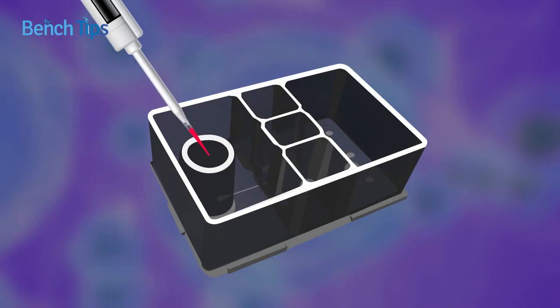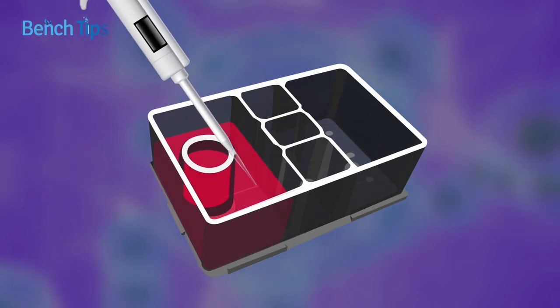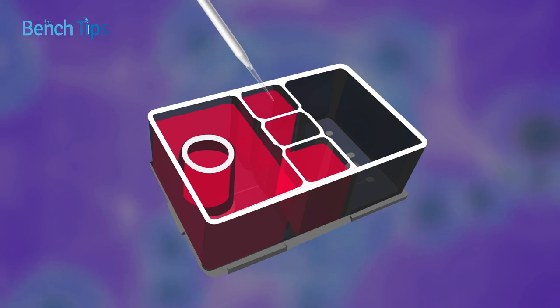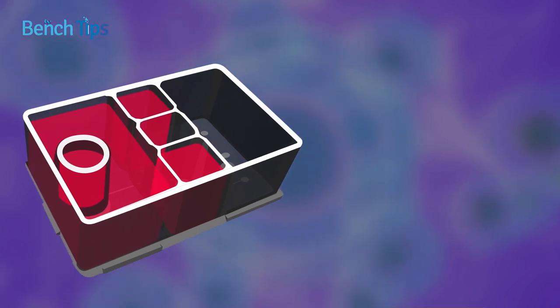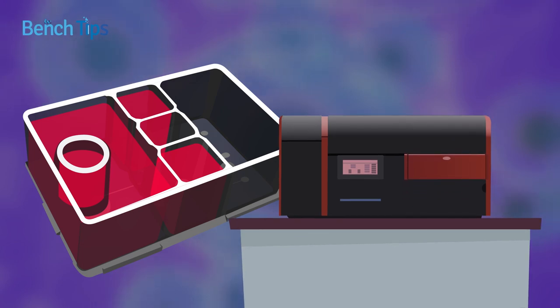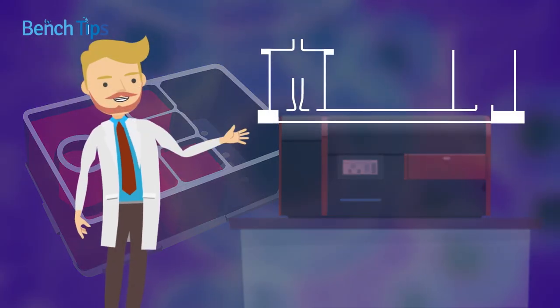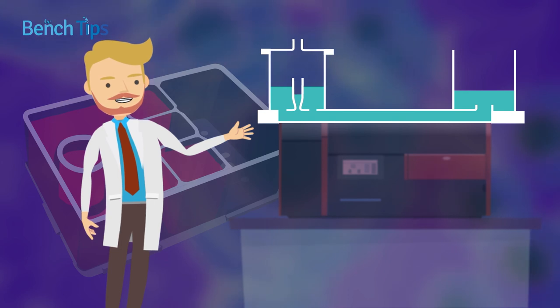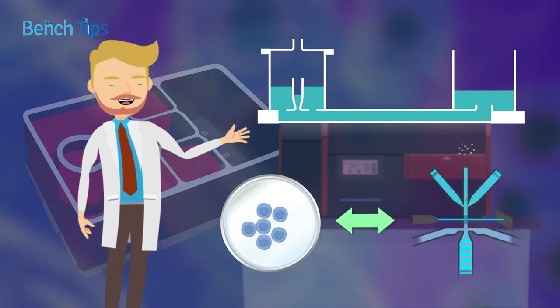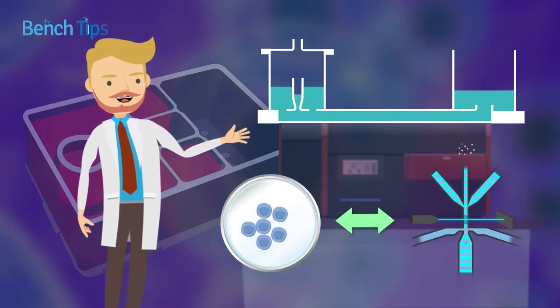Second, since the sample and the sheath fluid are both loaded onto the chip during flow shift cell sorting, rather than being introduced directly into the cell sorter, the choice of sheath fluid is no longer dictated by the instrumentation. This means that sheath fluid can be customized to suit the target cell type, providing a consistent environment between culture and sorting to further help prevent SIX.